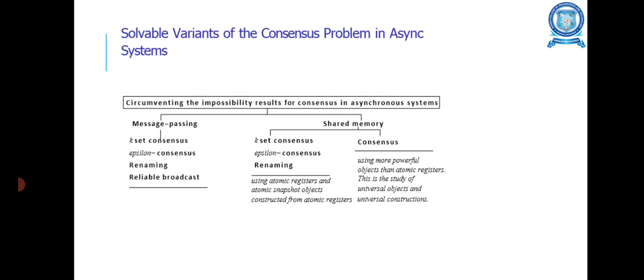Solvable variants of the consensus problem in asynchronous systems: There are two types of methods, mainly based on message passing and shared memory. In message passing, they use K-set consensus, Epsilon consensus, renaming, and reliable broadcast. For shared memory, there are two types: K-set consensus and consensus. K-set consensus, Epsilon consensus, and renaming use atomic registers and atomic snapshot objects constructed from atomic registers. For consensus, it uses more powerful objects than atomic registers. This is the study of universal objects and universal constructions.